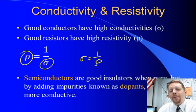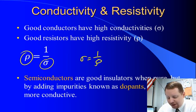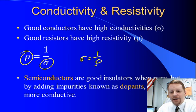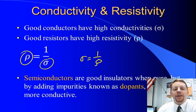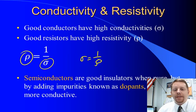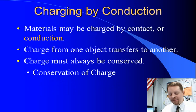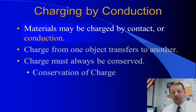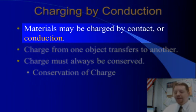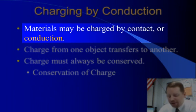When you hear about semiconductors, these are materials that when they're pure are pretty good insulators, but by adding certain materials to them known as dopants, you can make them much better conductors. Now let's talk about charging by conduction. Materials may be charged by contact, which we call conduction — that means charge is transferring from one object to another.